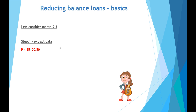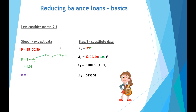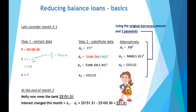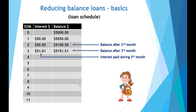For the third month, we take the end-of-second-month debt of $5,100.50. The rate remains the same, and again for one more month. Placing that into our compounding interest formula, at the end of the third month we have a debt of $5,151.51. Alternatively, starting from the original $5,000 with three compounding periods of 1.01 also gives $5,151.51. You can see the interest charge in the third month has increased again — up to $51.01 — and the balance continues to increase.